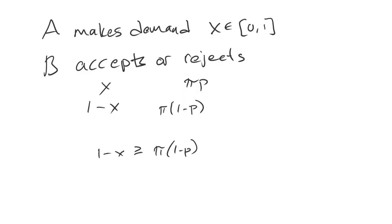And so if we solve for X, what do we get? We get X has to be less than or equal to 1 minus the value pi times 1 minus P. So that is B's decision rule.